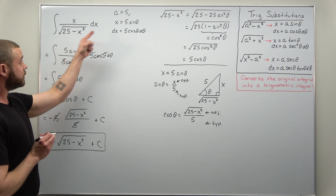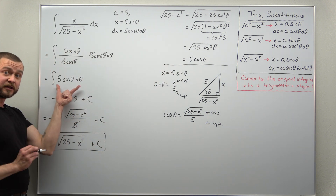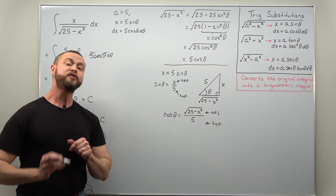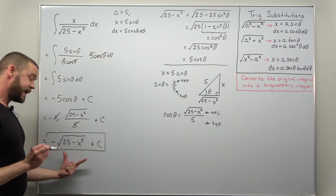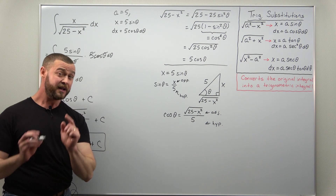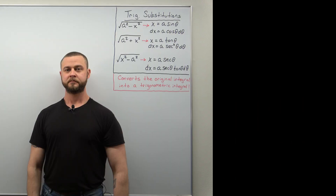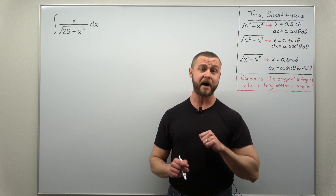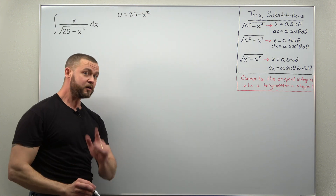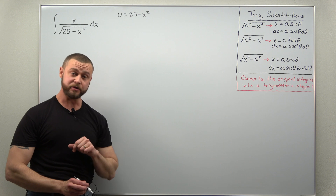The standard steps are: from your radical, choose your substitution; use that substitution to eliminate the radical and get a trig integral; evaluate the trig integral; then convert back to x using a conversion triangle. Now, while we found the antiderivative using trig substitution, it's much more efficient to use a basic u substitution — let's get to that now.